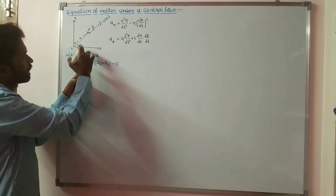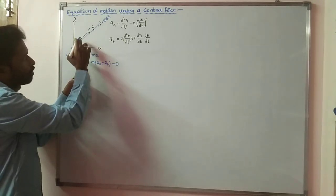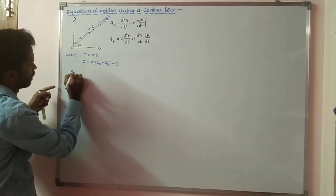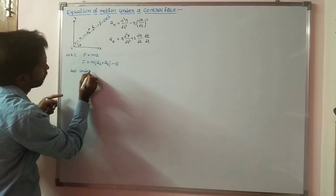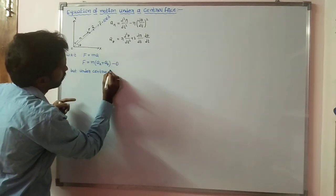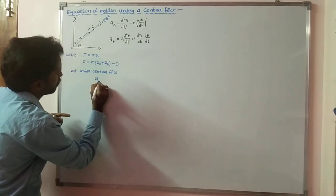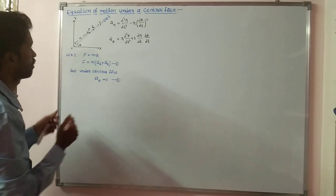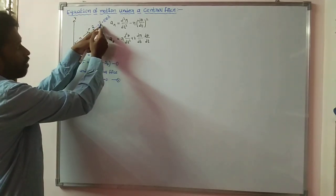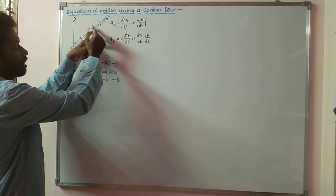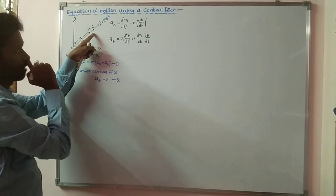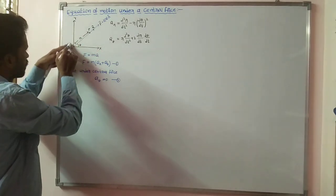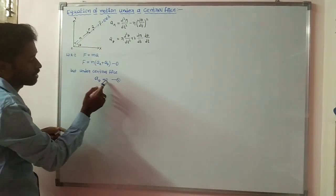Because central force can be explained using the polar coordinate system, which has a radial component and a transverse component. But under central force, the transverse acceleration is zero — let us call this equation number two. This is because central force always acts towards or away from the radial direction. There is no force acting along the transverse direction, the perpendicular direction. That's why transverse acceleration is zero.